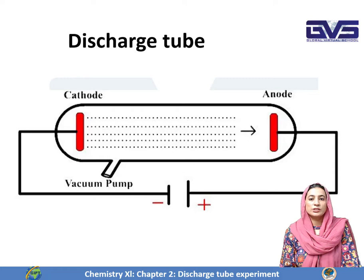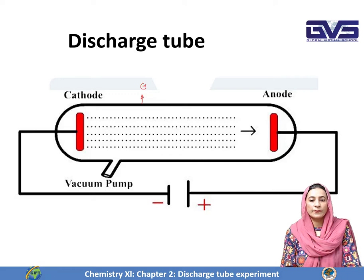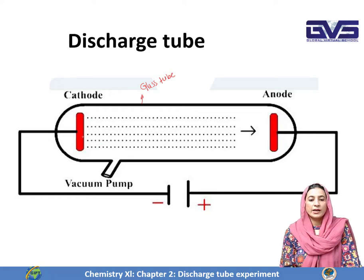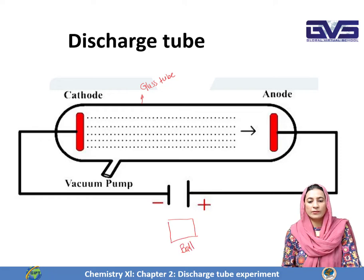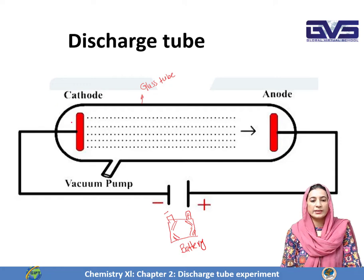Now I will tell you about the discharge tube — its construction. It consists of 5 to 6 parts. Number one is the glass tube — a simple glass tube. Then there are two electrodes made of metal. When one electrode is attached to the high voltage battery and connected to the negative terminal, it is called the cathode.